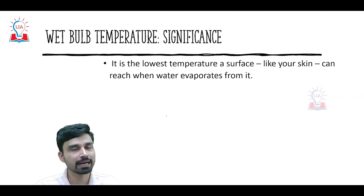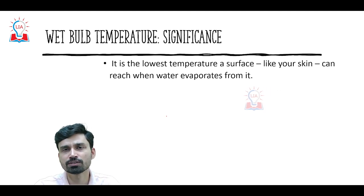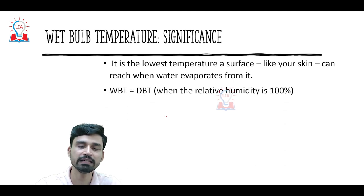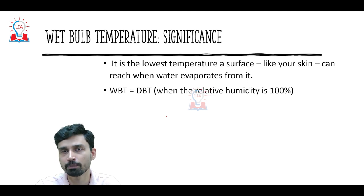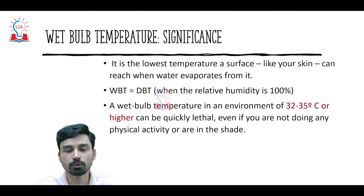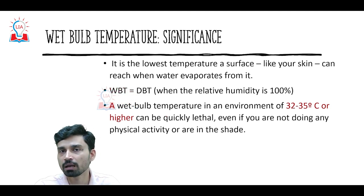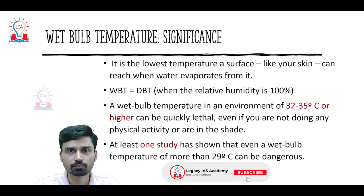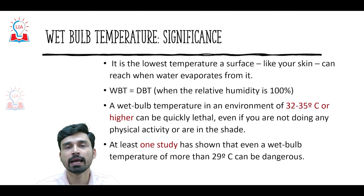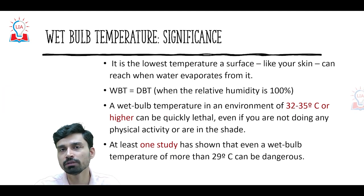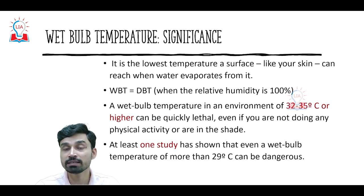Dry bulb temperature is simply the ambient temperature measured directly, while wet bulb temperature refers to the lowest temperature a surface — such as your skin — can reach when water finally evaporates from it. If relative humidity is 100%, meaning air is in a saturated state, the wet bulb temperature generally equals the dry bulb temperature. Significantly, a wet bulb temperature of 32 to 35 degrees Celsius or higher can be quickly lethal even if you are not doing any physical activity or are in the shade. At least one study has shown that even a wet bulb temperature above 29 degrees Celsius can be very dangerous for the human body.